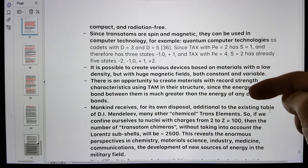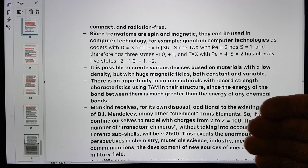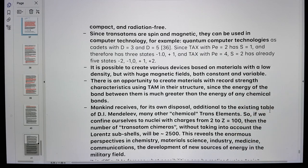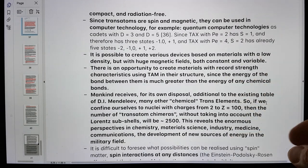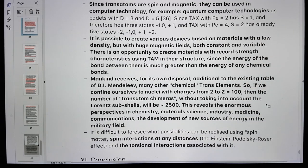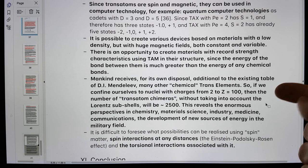You could create materials that are light and very strong and impervious to chemical attack, because the chemical attack is not sufficient to actually break up the hybrid bonds. Mankind receives, additional to the existing table of Mendeleev, many other chemical trans elements.